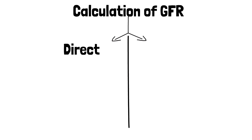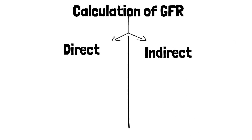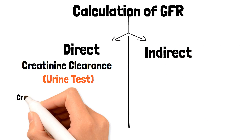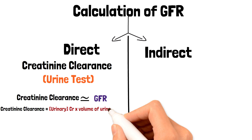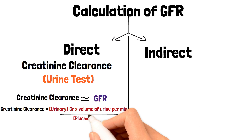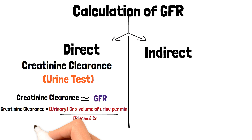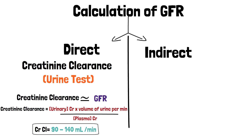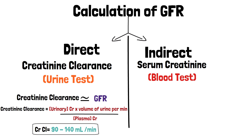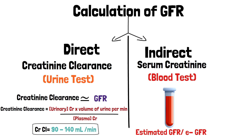Calculation of GFR is done either directly or indirectly. GFR can be calculated directly through creatinine clearance using a urine test, since creatinine clearance approximates GFR. The creatinine clearance of a healthy individual ranges from 90 to 140 milliliters per minute. GFR can also be calculated indirectly by drawing blood and analyzing serum creatinine levels — this is known as estimated GFR, or eGFR.